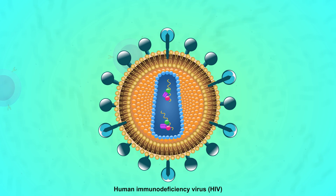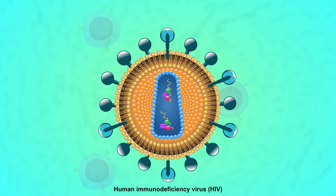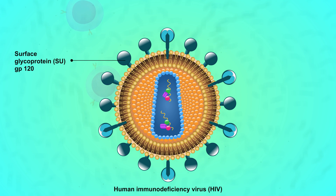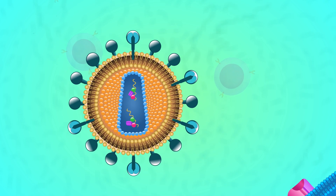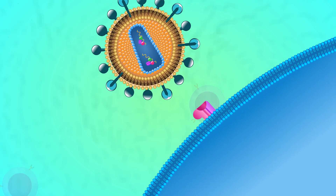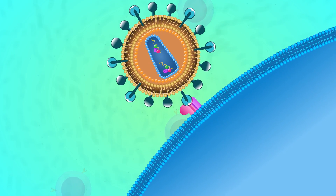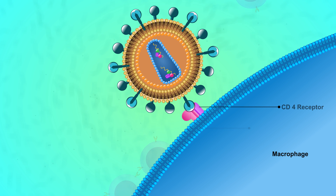When HIV first enters the human bloodstream, the virus circulates throughout the body. The protective surface of HIV is studded with particular proteins called GP120, and inside is a capsid that contains the viral RNA and viral enzymes. Initially, the GP120 protein on the virus is only able to bind to a cell surface protein on the macrophage called the CD4 receptor.